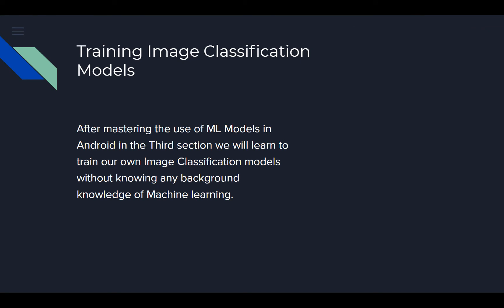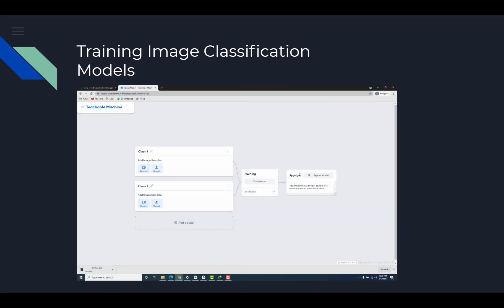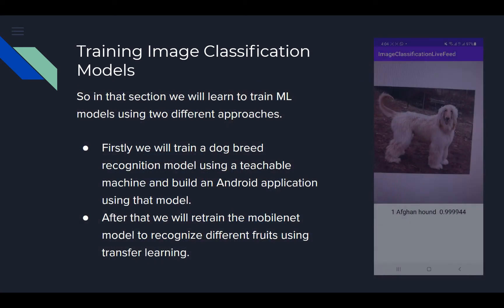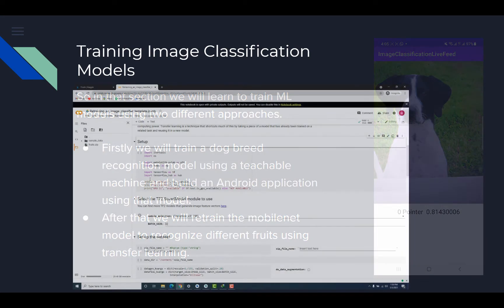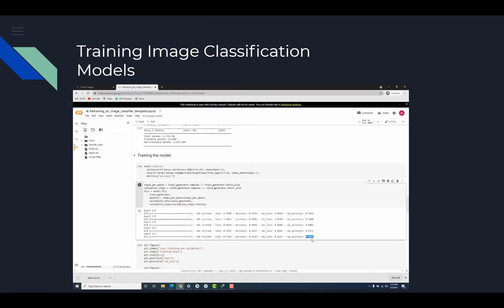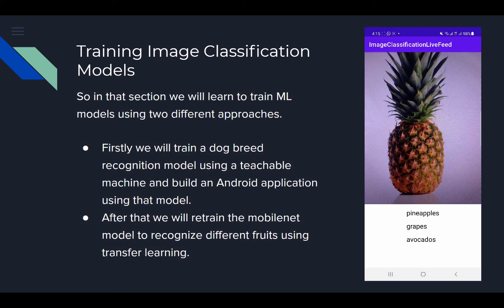After mastering the use of machine learning models in Android, in the third section we will learn to train our own image recognition models without knowing any background knowledge of machine learning. We will train models using two different approaches. First, we will train a dog breed recognition model using a platform named Teachable Machine and build a live feed dog recognition application using that trained model. Second, we will retrain a MobileNet model to recognize different fruits using a technique called transfer learning, and then use that trained model to build a live feed fruit recognition application.